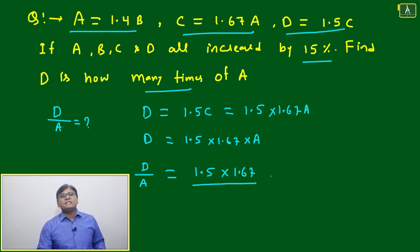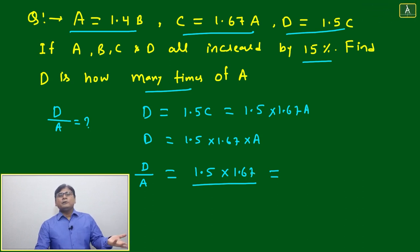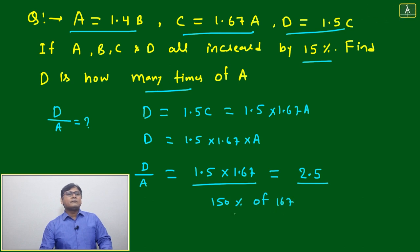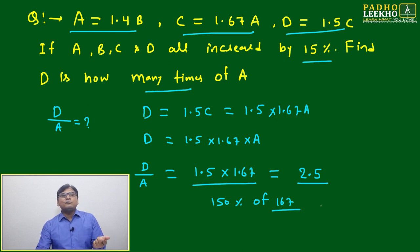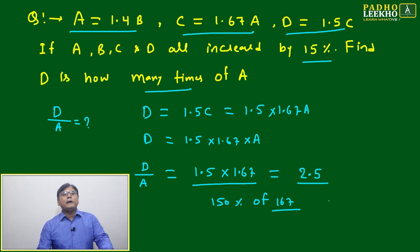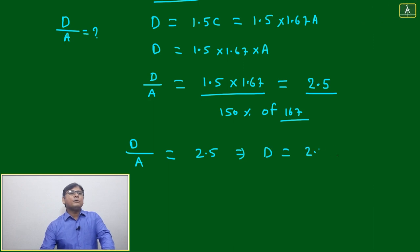To find 150 percent of 167: just take half of 167 and add it. Half of 167 is 83.5, so we take 83. Adding 83 to 167 gives 250, which means 2.5. We have done 150 percent of 167 — that is 100 percent plus 50 percent. 100 percent of 167 is 167 itself, and 50 percent is 83.5, approximately 83. Adding gives 250, meaning 2.5.